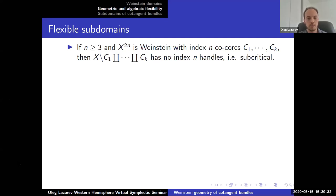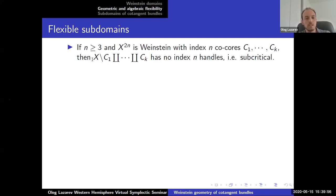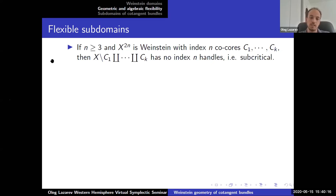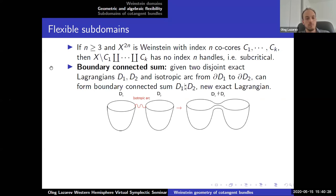Now let's try to cook up some flexible subdomains. If X is Weinstein with index n co-cores c_1 through c_k, you can carve out those Lagrangian discs — each time you carve out a disc you remove the handle — and the resulting domain X minus {c_1, ..., c_k}, obtained by removing the co-cores, is subcritical. By definition it's flexible, but that's not a very interesting class of flexible subdomains because those are all subcritical.